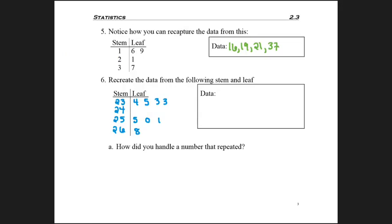Well, let's go ahead and recreate the data. As I work on this, I'm pairing the 23 with the 4, then the 5, then the 3, and then the other 3. So your data should be 234, 235, 233, 233 again, 255 is next, 250, 251, and 268.